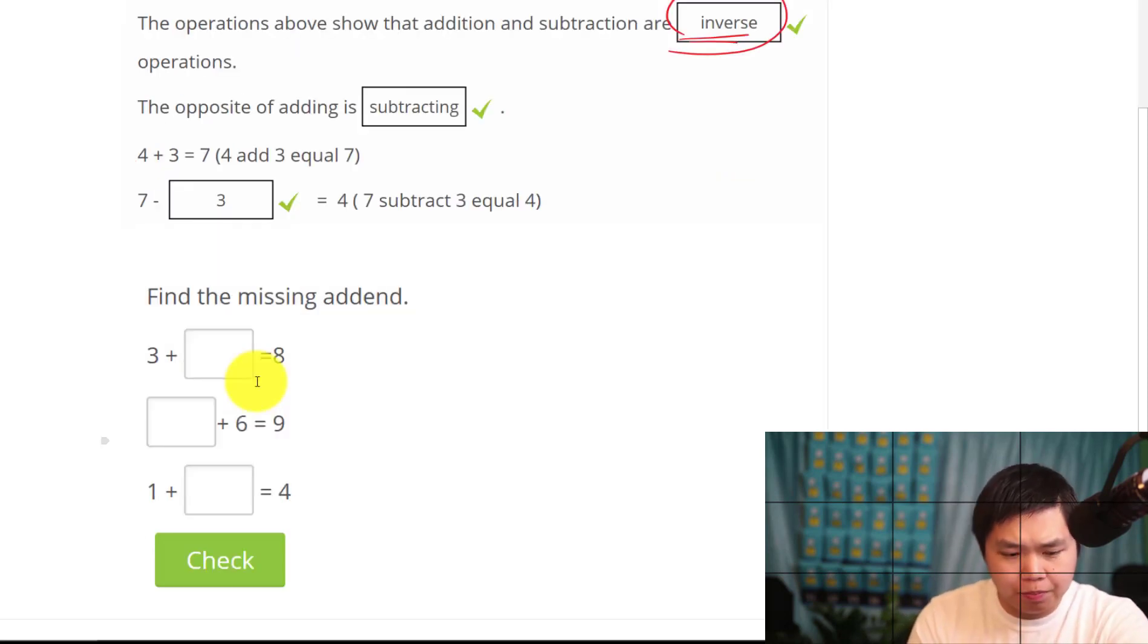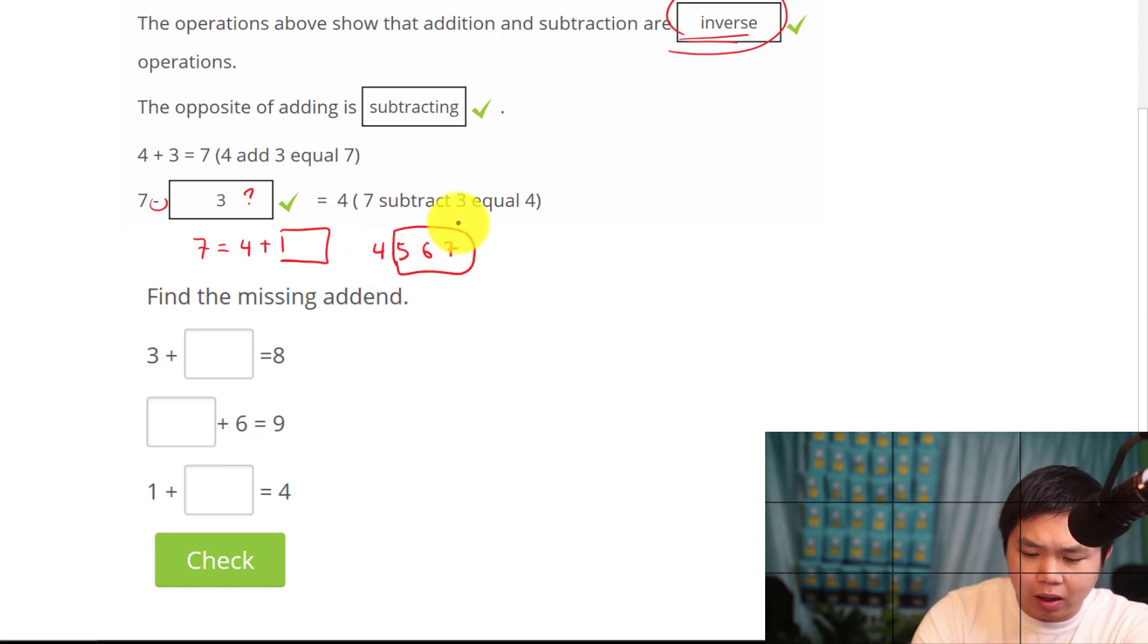Now to illustrate an example, we have a box that's missing right here. We have 7 minus that box equal to 4. Well, in this case, you see that 7 minus that box, what is that box going to equal to? It's the opposite, right? So we can have this 7 equal to 4. What's the opposite of subtraction? Adding that box. Well, what's 4 plus the box equal to 7? Let's count it. We have 4, 5, 6, 7. So what is that number right there? That's 3, right? So therefore, this is 3.